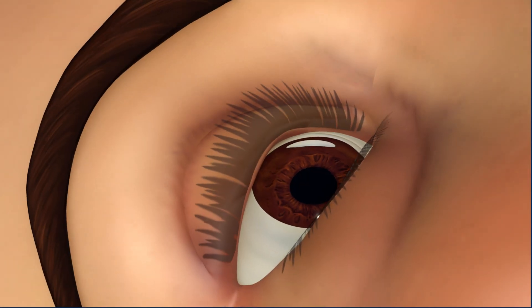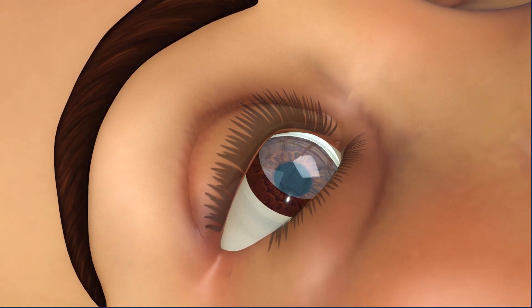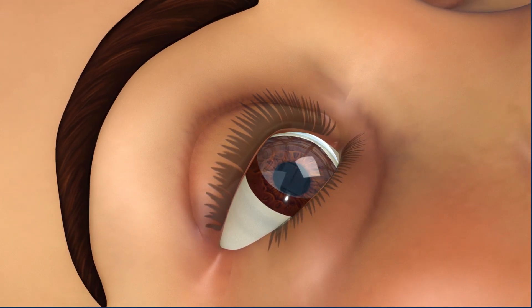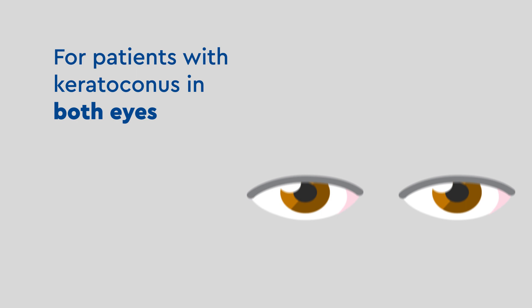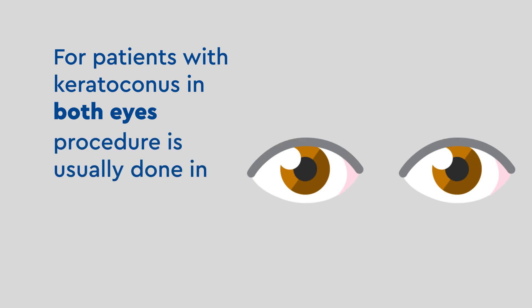Finally, numbing eye drops and a soft contact lens are applied to act as a bandage while your eye heals. For patients with keratoconus in both eyes, the procedure is usually done in two separate surgeries.